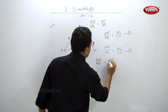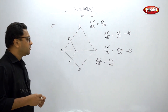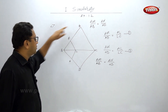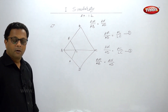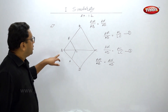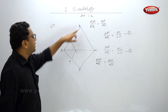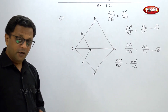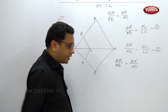But we want AM/AB, not AM/MB. We need the full AB. To get there, we first use invertendo to flip the ratio: MB/AM equals ND/AN. Then we apply componendo to add the numerator and denominator.